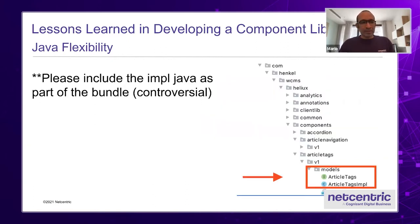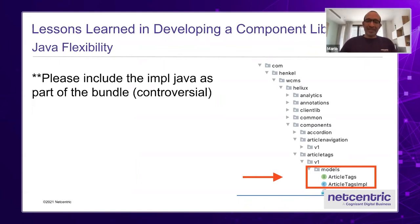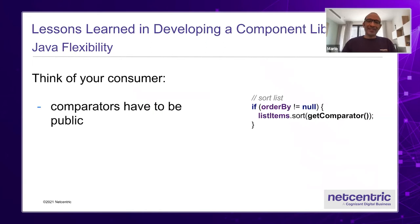Another thing, more controversial because we're thinking about a library not a project: we include the implementation Java class as part of the package, which means the OSGI bundle will offer that. Your consumer projects sometimes need to extend, and in this case it will save them a lot of time. At the same time that you offer the implementation, you have to be aware of some methods that you normally have protected or private — the comparators, for example, or any type of decoration. Think about whether you should make it private or not. What you want to expose is a different game now that you're a library.